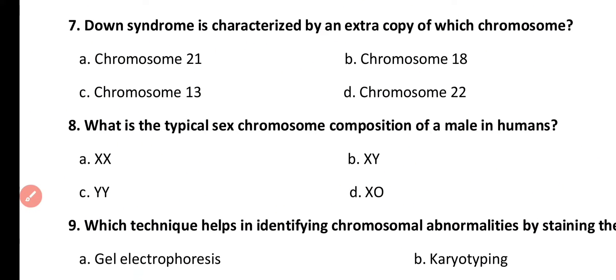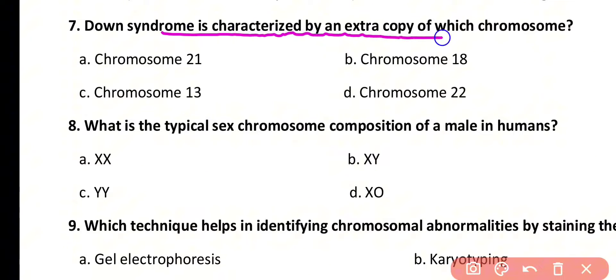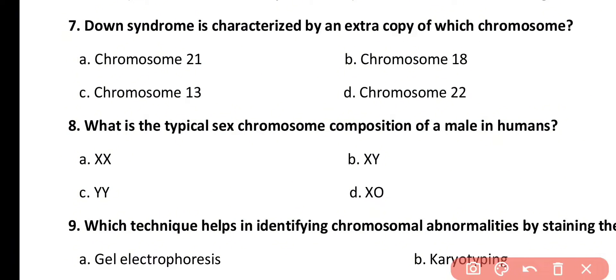Question number 7. Down syndrome is characterized by an extra copy of which chromosome? Options: chromosome 21, chromosome 18, chromosome 13, chromosome 22. Correct answer is option A. Down syndrome is characterized by an extra copy of chromosome number 21, so it is also called trisomy 21.